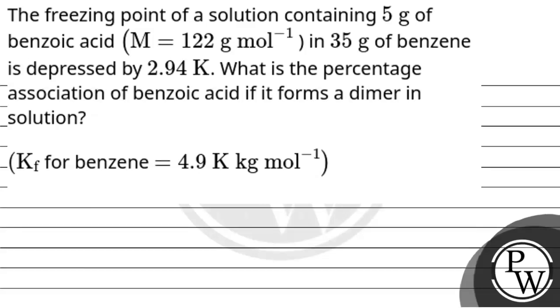Hello, let's read the question. The question says the freezing point of a solution containing 5 grams of benzoic acid with molarity 122 grams per mole in 35 grams of benzene is depressed by 2.94 Kelvin. What is the percentage association of benzoic acid if it forms a dimer in the solution? Kf for benzene is 4.9 Kelvin kilogram per mole.